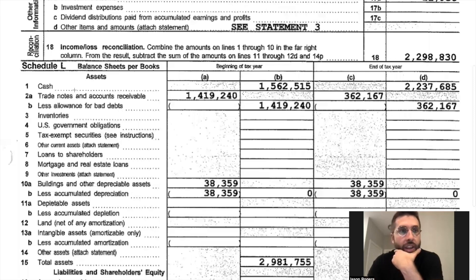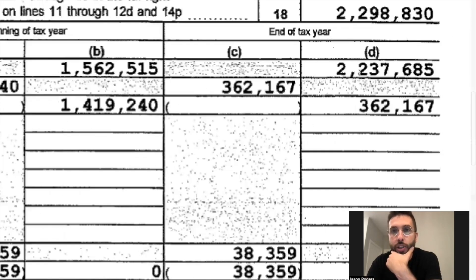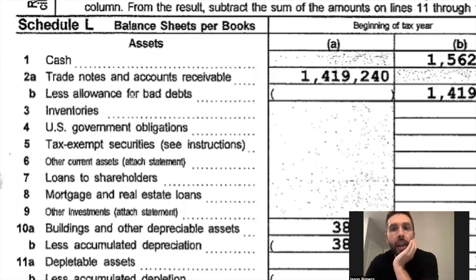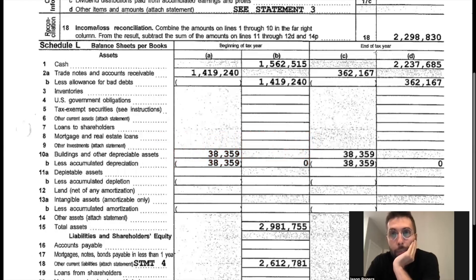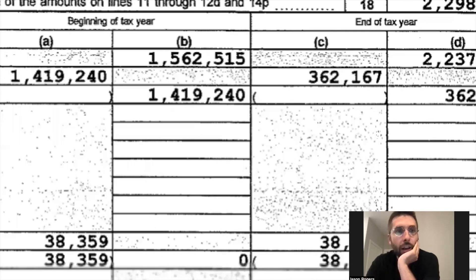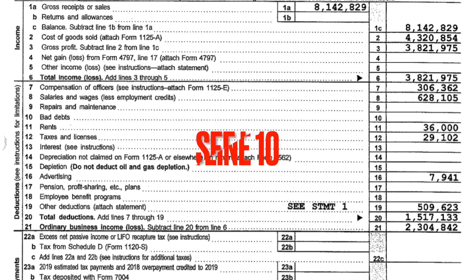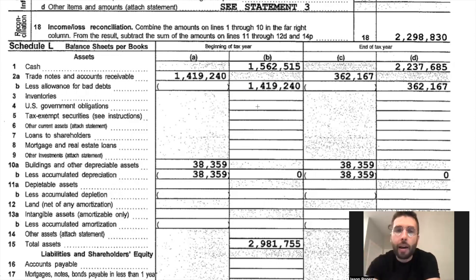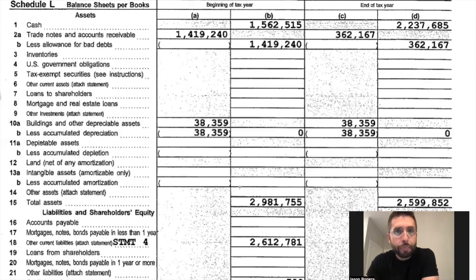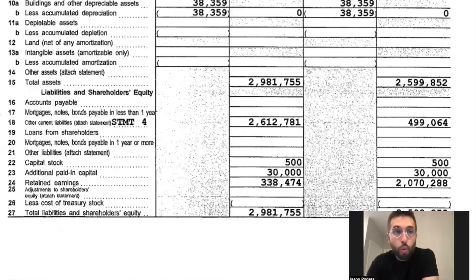At the beginning of the taxable year, they had over 1.5 million in cash; by the end, over 2.2 million in cash. Then you look at AR — accounts receivable. At the beginning of the year they had 1.9 million in receivables, monies owed for services rendered. At the end of the taxable year they got that way down to $362,000 — a meaningful decline. There's also a line for allowances for bad debt worth investigating, and this is where you want to work with a CPA.